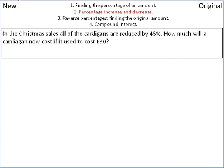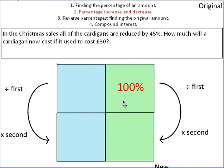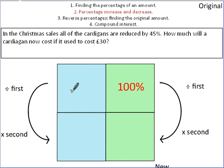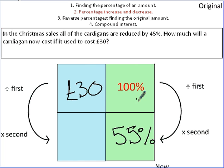Let's have a look at another question then. In the Christmas sales, all of the cardigans are reduced by 45%. How much will a cardigan cost now if it used to cost £30 even? So, let's go for the original amount first. The original amount, £30. They've been reduced by 45%. Now, if they've been reduced by 45%, that means we're looking for 55%. 100% is the original amount. We're going down to 55% because 45% has been reduced.